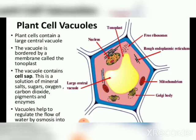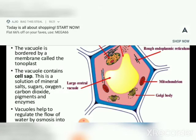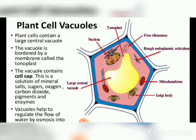Tonoplast has sites for the passage of a number of ions and other materials into the vacuole against their concentration gradient. As a result, their concentration is quite high in the vacuole as compared to the cytoplasm. Tonoplast also stores reserved food material such as sucrose.